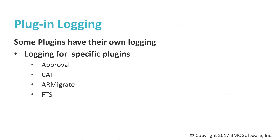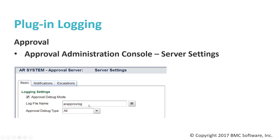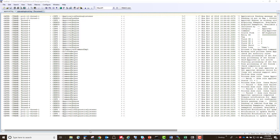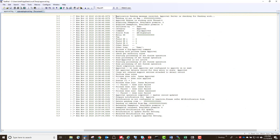There's one other type of logging — logging that certain plugins have specific to themselves. Examples are Approval Server, CAI, AR Migrate (the Deployment Manager), and FTS — all have their own logging. For Approval, open the Approval Administration console and go to server settings to enable approval-specific logging with extra debug mode, written to its own named log file. The approval log looks just like the regular plugin logs — same format, with different module names — but gives you a detailed play-by-play of what the approval server was actually doing, with a lot of detailed information for troubleshooting approval problems.